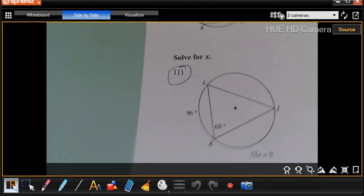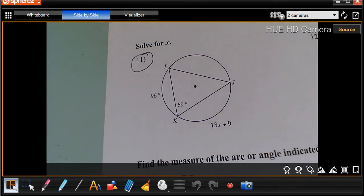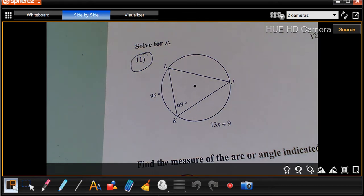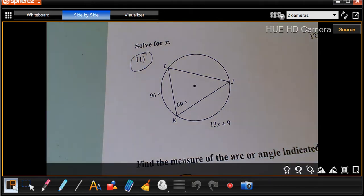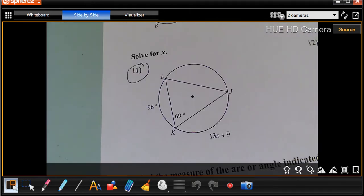I'm going to look at one from the next page. We're going to look at number 11, where we're going to solve for X, and we're going to use those same things. The inscribed angles are half their intercepted arc. So if we're looking right here, we've got 96. I want to find out what X is.